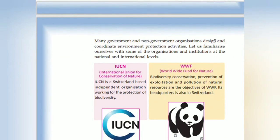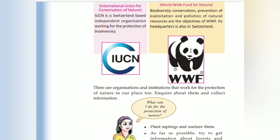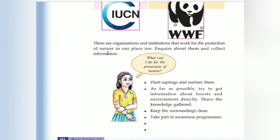Many government and non-government organizations design and coordinate environmental protection activities. The IUCN — International Union for Conservation of Nature — works for the protection of biodiversity. The WWF — Worldwide Fund for Nature — works against exploitation and pollution of natural resources. There are also many organizations and institutions working for the protection of nature at the local level.